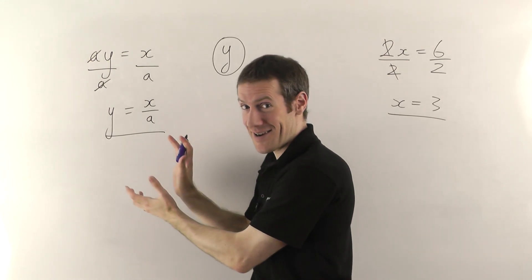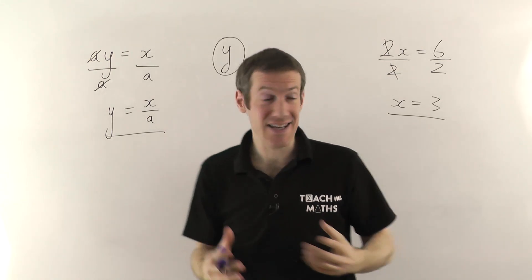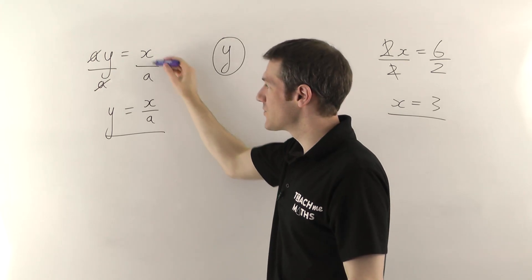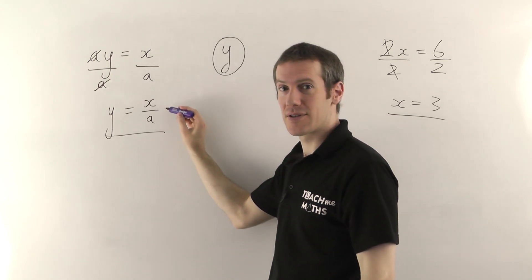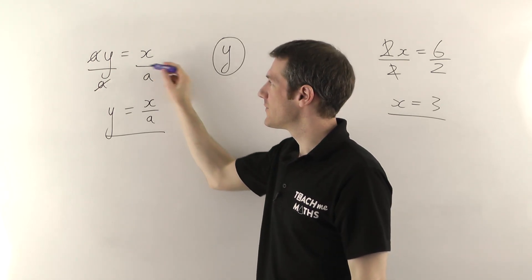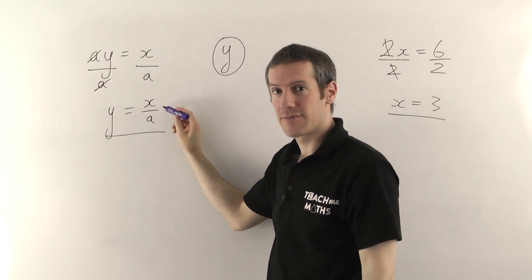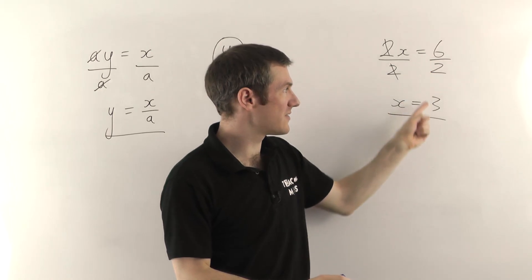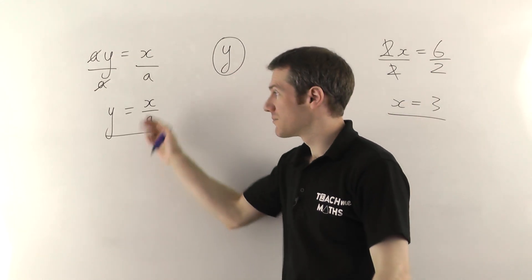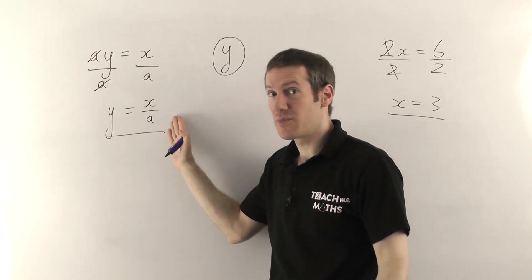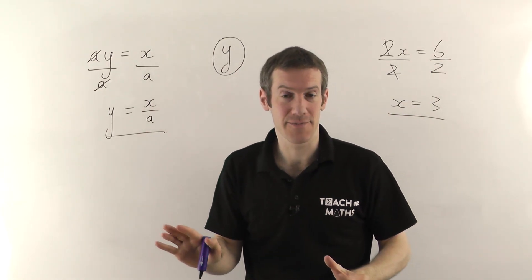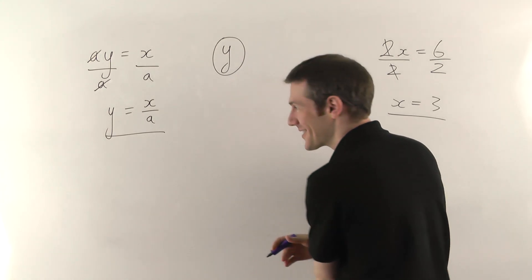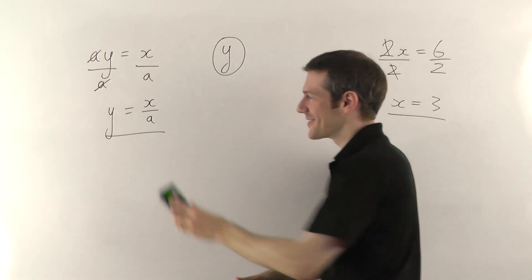Although it looks very strange, transposition is actually easier than solving equations, because you never have to work anything out. If you're dividing, you just write it as a fraction — you don't have to calculate what 6 divided by 2 is, because you're putting the numbers in at a later date. Let me do another one; once you've seen a couple of these you should get the hang of it.